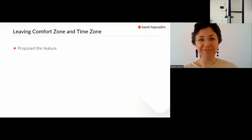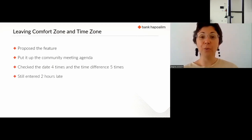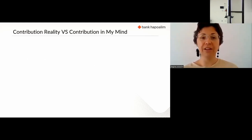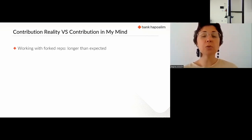Leaving my comfort zone — I wrote a proposal for the feature and put it on the shared community meeting agenda. I checked the meeting date four times and the time difference five times. When I entered the meeting, I was two hours late nevertheless. Luckily they still discussed it without me and decided they wanted the feature. Working with a fork repo took longer than expected. I was forgetting to sign off commits and had to recreate my branch often, and I didn't work efficiently with pulling changes from master.